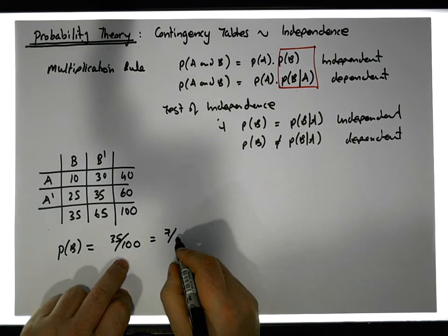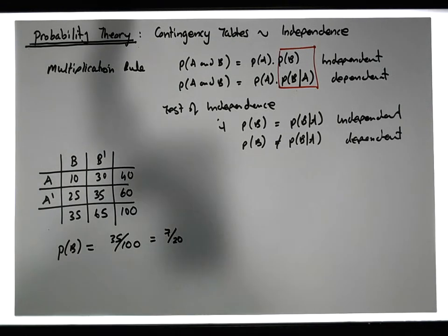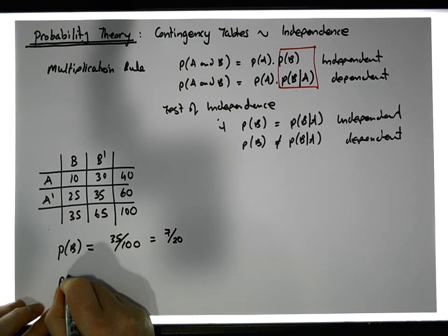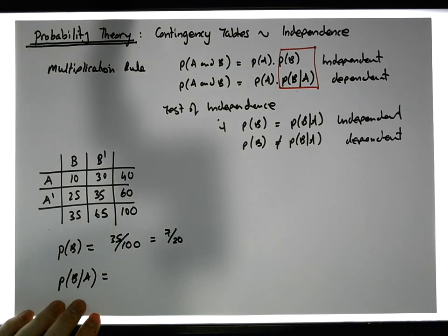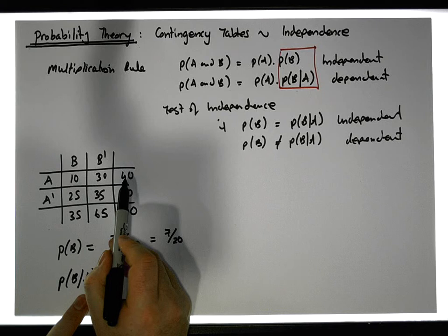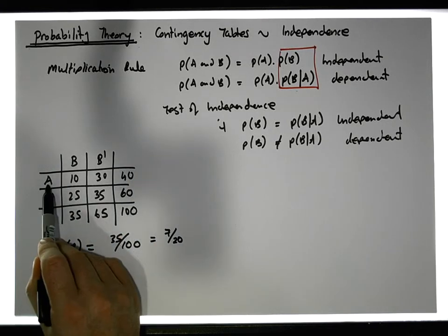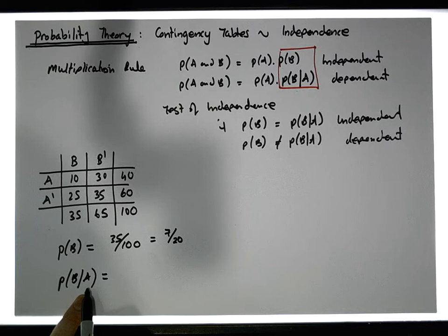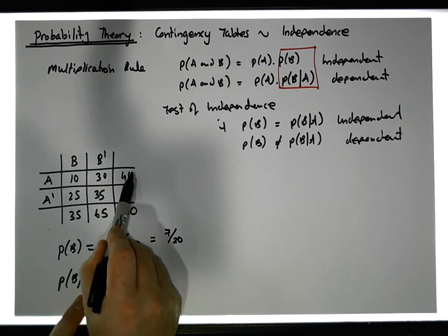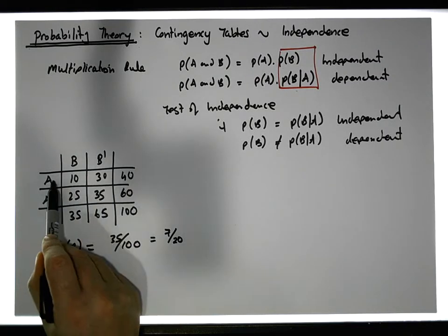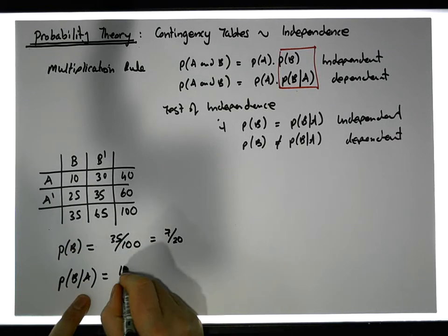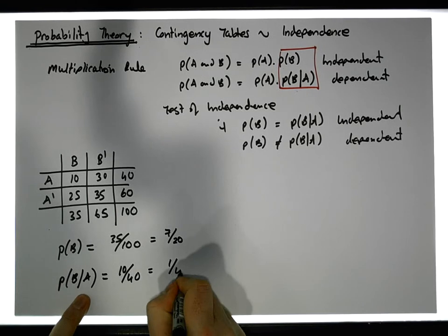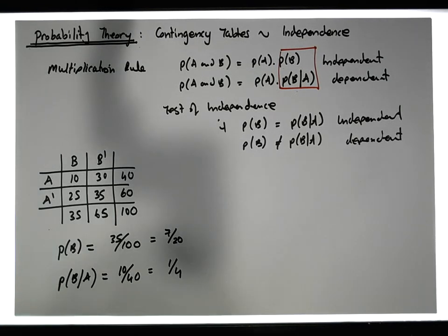Dividing top and bottom by five gives us 7 out of 20. Now let's calculate the probability of B given that A has occurred. We know that A has happened, so B is being selected from within the A row. What's the probability of B knowing A has happened? Well, A is along this row here, so the chances of selecting B from these values — you have 10 chances out of 40, giving a 1 in 4 chance.